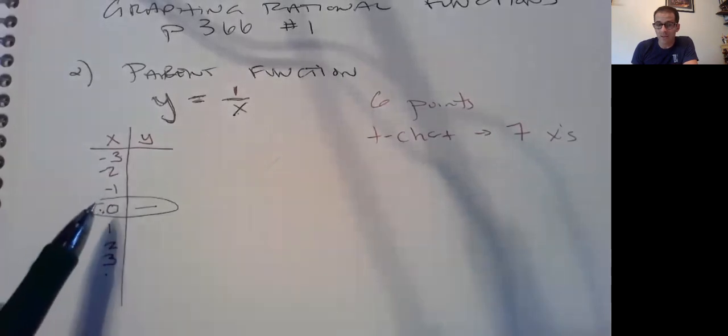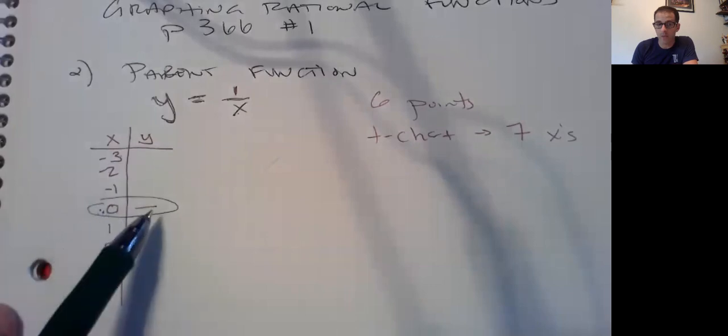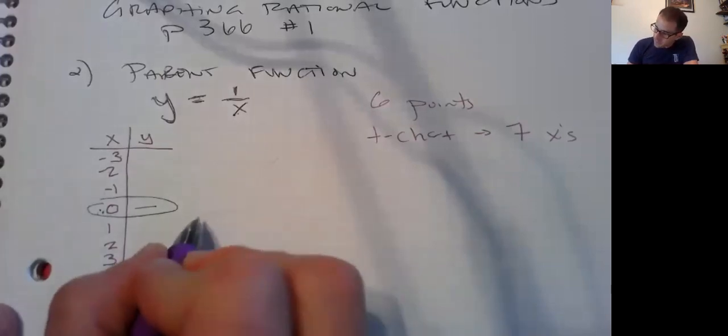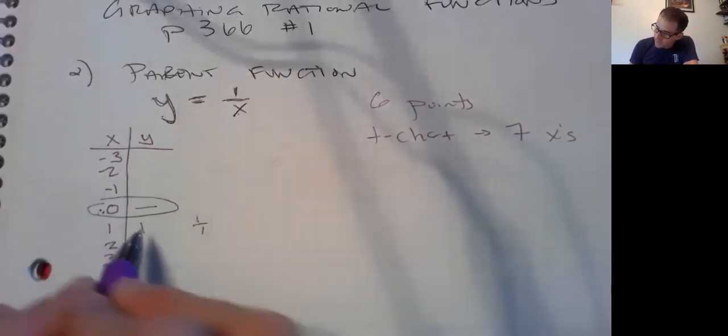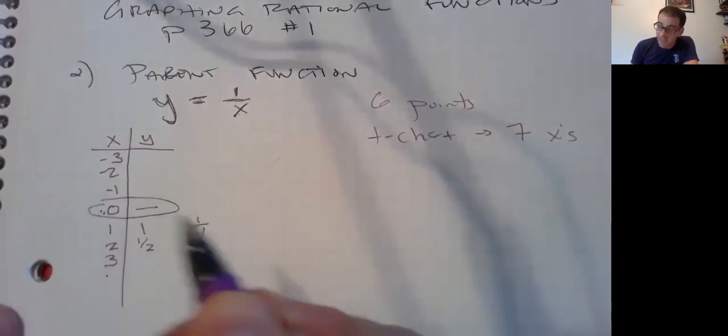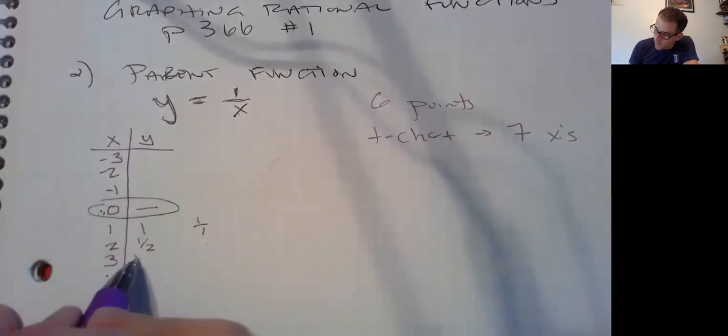What can't x be? It cannot be zero because one over zero doesn't exist. Okay, let's start easy. One over one is one. One over two is one over two. I guess I don't really need that column right now. One over three.